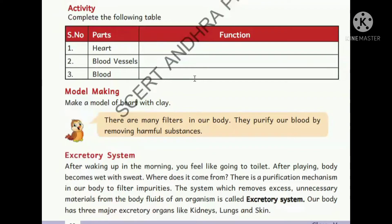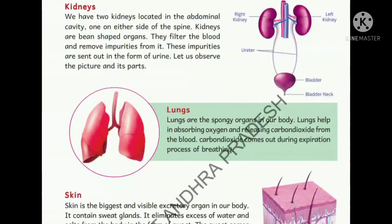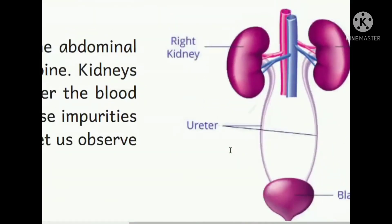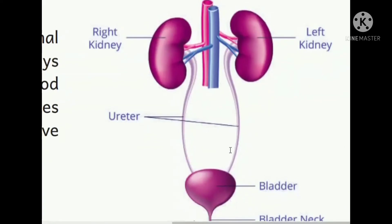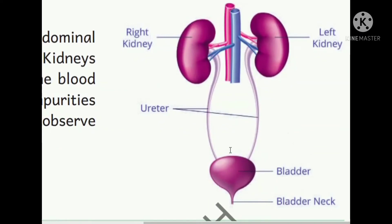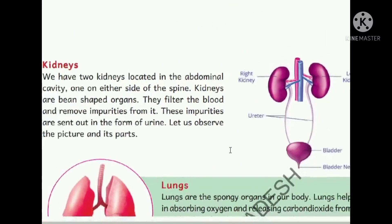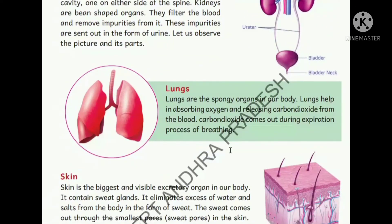Now let us see the excretory system. Just like our house has a dustbin for waste, our body has three dustbins: kidneys, lungs, and skin. The kidneys are bean-shaped organs - a left kidney and a right kidney - located on both sides of the spinal cord. The tubes connected are called ureters, and the bladder stores waste like a dustbin, releasing it through the bladder neck. The kidneys purify the blood and send out urine.